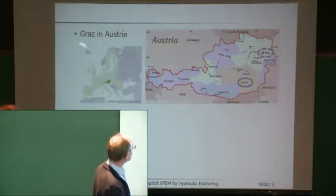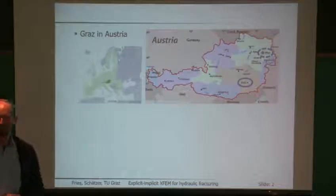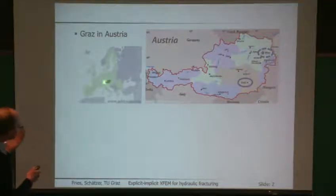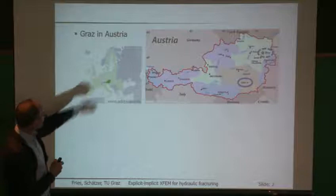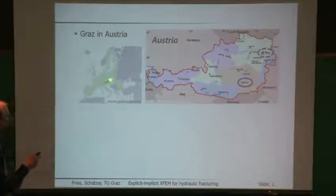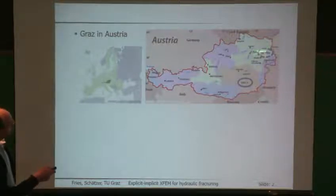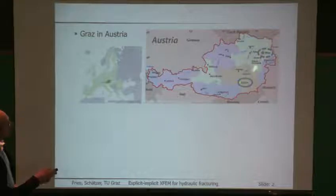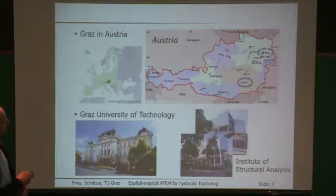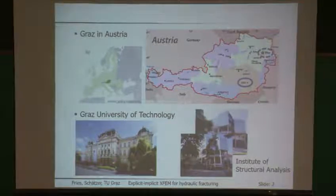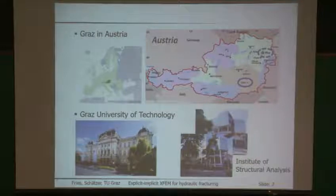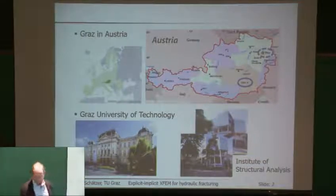Which is Graz in Austria — and it's not a lack of education if you don't know where that is. Austria would be here in the heart of Europe, next to Switzerland between Germany and Italy. Most of you will know where Vienna is, and it would be like a two-hour car ride to Graz. This is Graz University of Technology — quite a nice main building — and right next to this would be the building where our Institute of Structural Analysis is located.